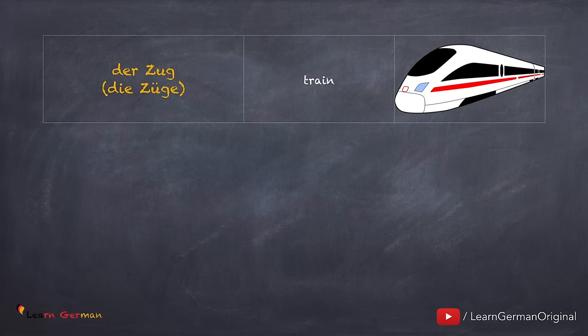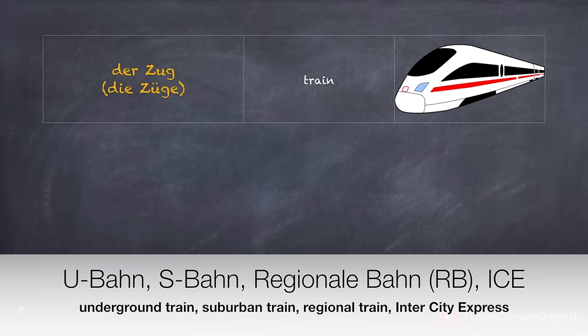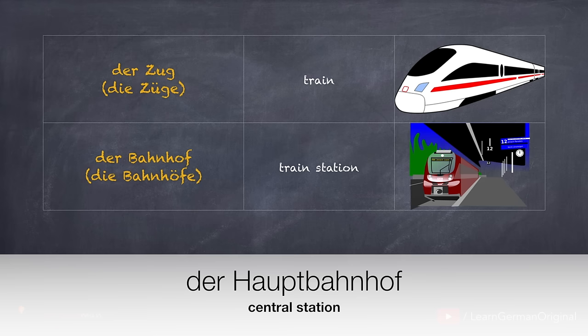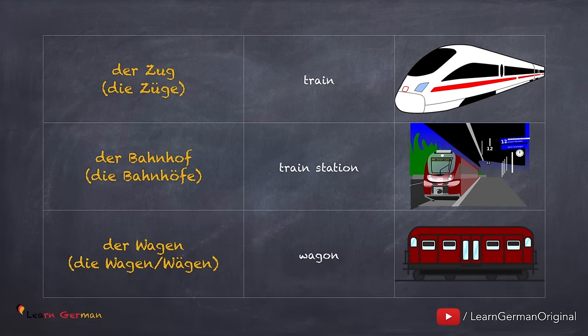Der Zug, die Züge. In Germany there are many kinds of trains: there is S-Bahn, U-Bahn, Regionalbahn, ICE, etc. Der Bahnhof, die Bahnhöfe — and almost every city has a Hauptbahnhof. Der Wagen, die Wagen. In Österreich und in Süddeutschland sagt man auch die Wägen.